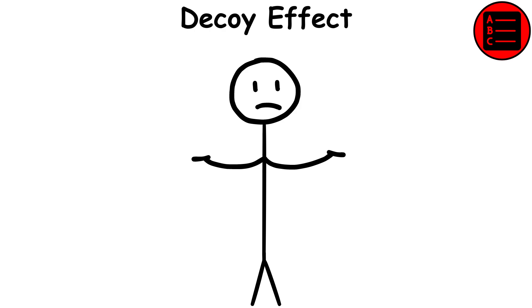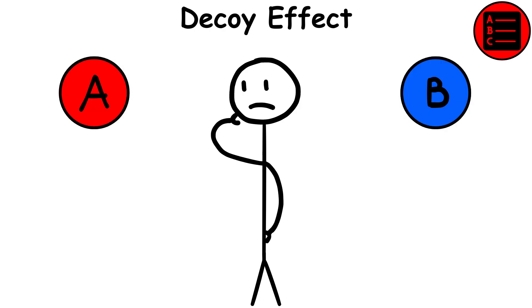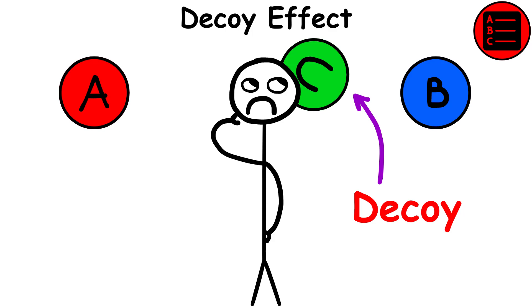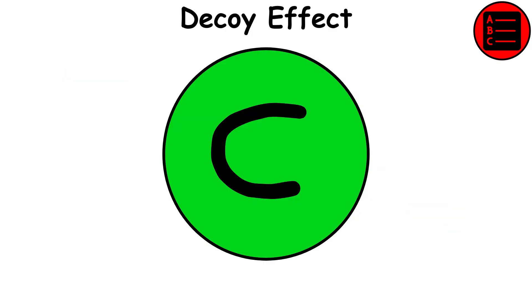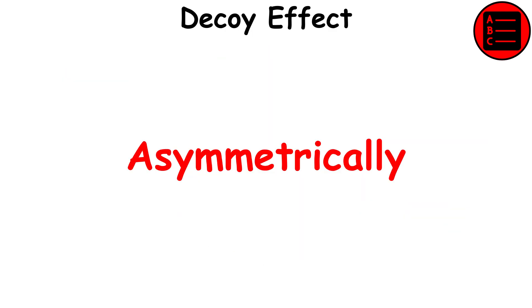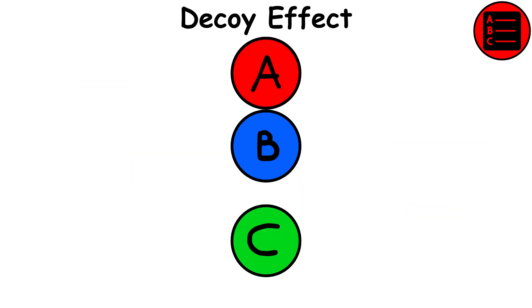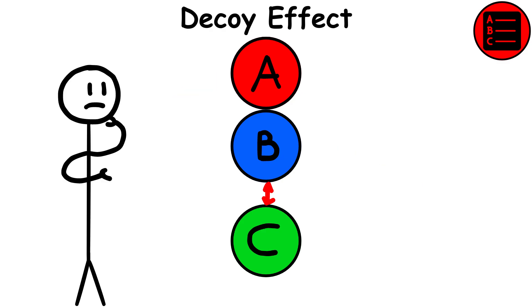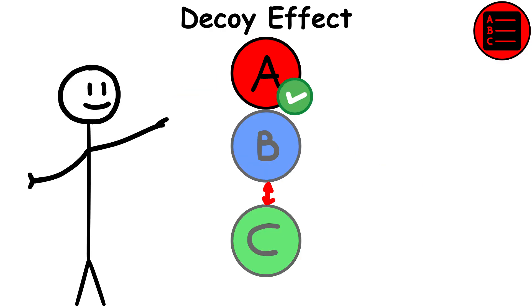Decoy effect. This describes how people's preferences when picking between two options are altered by adding a third, relatively unattractive decoy option. The decoy is asymmetrically dominated, meaning that it is completely inferior to one option — the target — and somewhat inferior to the other, the competitor, making us more likely to choose the prior.